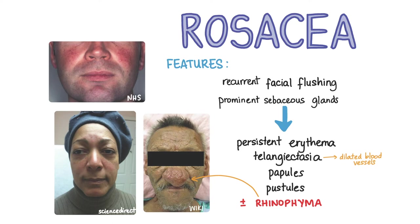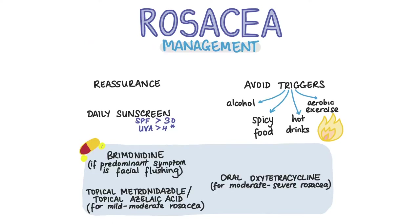The nose, cheeks and forehead tend to be commonly affected. The first step of management is reassurance, education and advice. Reassure patients that although rosacea cannot be cured, it's a benign condition with very few rare complications and symptoms can be controlled. Advise the patient to avoid triggers like alcohol, spicy foods, hot drinks and aerobic exercise. If facial flushing is predominant, consider prescribing brimonidine, an alpha-adrenergic agent. They must also use daily sunscreen. Mild to moderate rosacea should be treated with topical metronidazole or topical azelaic acid, while moderate to severe papulopustular rosacea usually requires oral antibiotics like oxytetracycline.